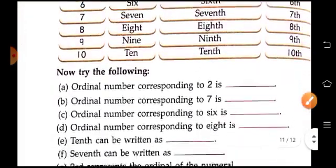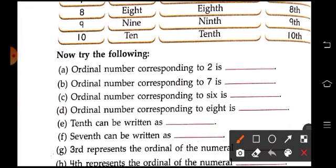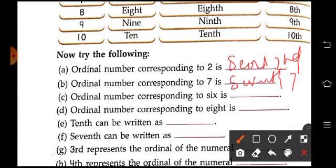So the ordinal number corresponding to 2 is 2nd, or we can write 2nd. Now the ordinal number corresponding to 7 is 7th, or we can write like this. So do the rest of the sums.